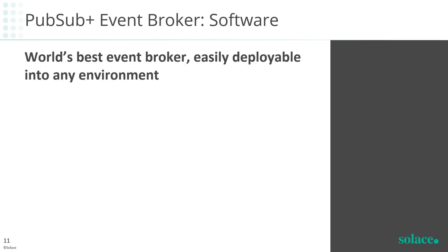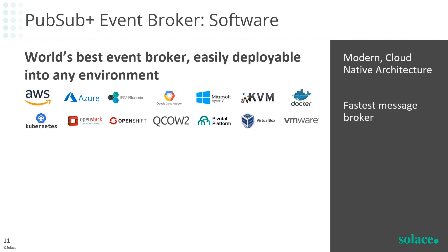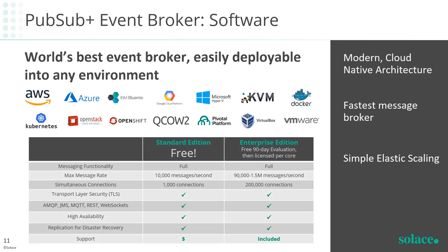PubSub Plus Event Broker software runs on popular containers and hypervisor platforms including Docker, Kubernetes, OpenShift, and Pivotal Platform, with quick starts and connectors for AWS, Azure, and GCP. It features a modern cloud-native architecture with load balancing, horizontal scaling, and CI/CD deployments, and a multi-threaded parallel pipeline architecture making it faster than any other software broker. The enterprise version supports up to 200,000 concurrent connections and hundreds of thousands of messages per second. There's also a free version identical except for limiting connections to 1,000 and messages to 10,000 per second — a great enterprise-grade alternative to open source brokers, with a seamless upgrade path.